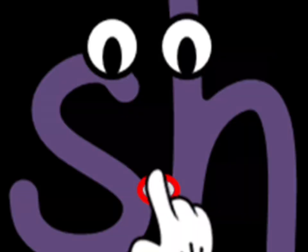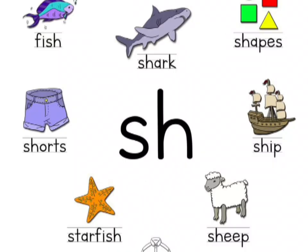So the first sound is SH. Let's see some examples of it. F-SH: fish. SH-ark: shark. Shapes, shorts, starfish, sheep, ship.